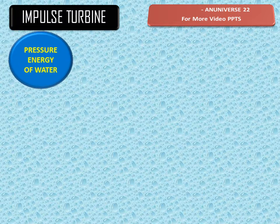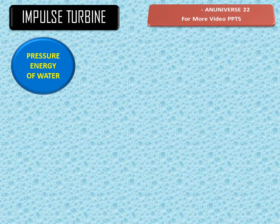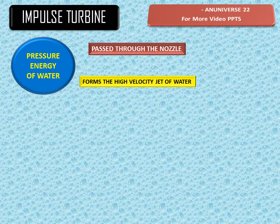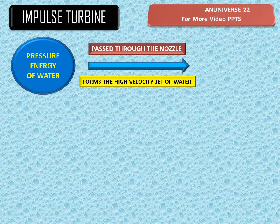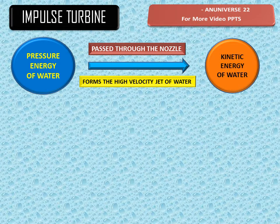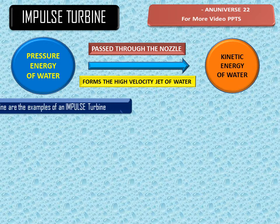In the penstock, pressure energy of water is available, and when this water passes through the nozzle it forms a high-velocity jet of water. This high-velocity jet is totally converted into kinetic energy, so we can say the available energy of water is converted into kinetic energy of the water.